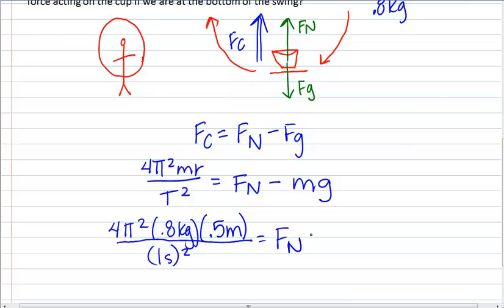So 1 second squared, that will equal our normal force, again that's what we're trying to solve for, minus our mass times gravity, so 0.8 kg times 9.8 meters per second squared.